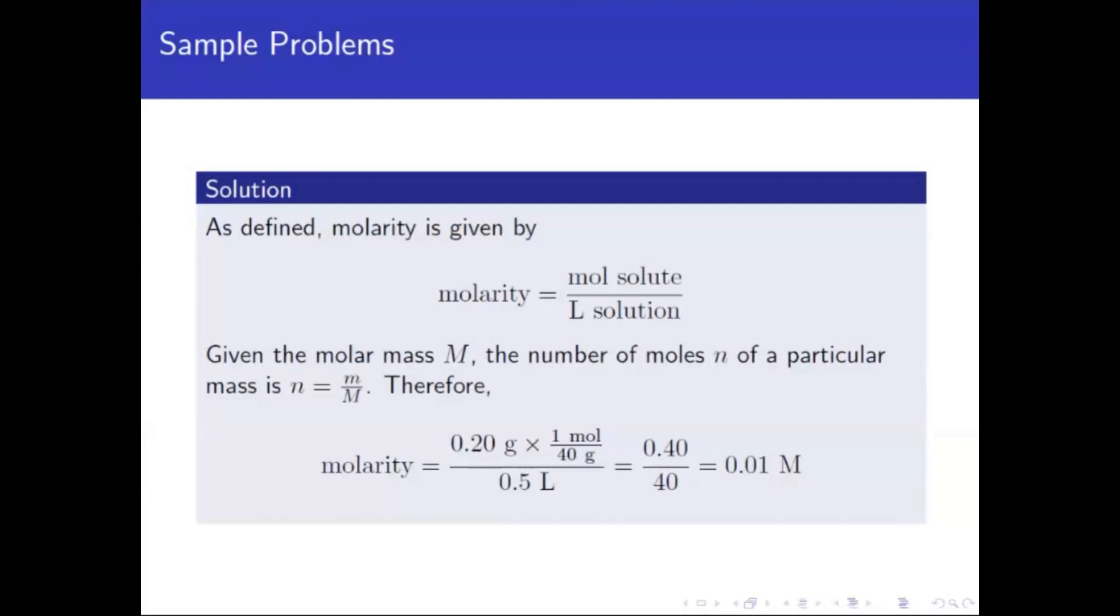So 0.4 over 40, that is very easy. That's 0.01. It's like 40 divided by 40 is 1, but you have two decimals, so we need also 2 decimal places. So that's 0.01. That's the answer.